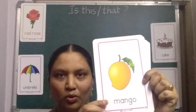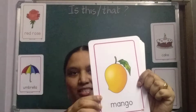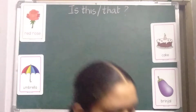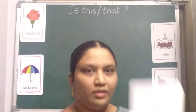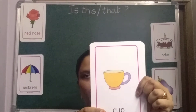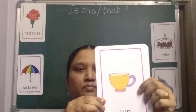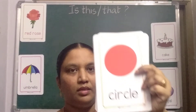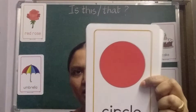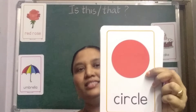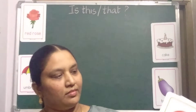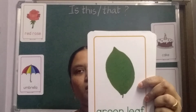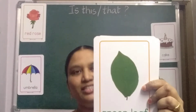Is that a mango? Yes, it is a mango. Is this a cup? Yes, it is a cup. Is that a circle? Yes, it is a circle. Is this a leaf? Yes, it is a leaf.